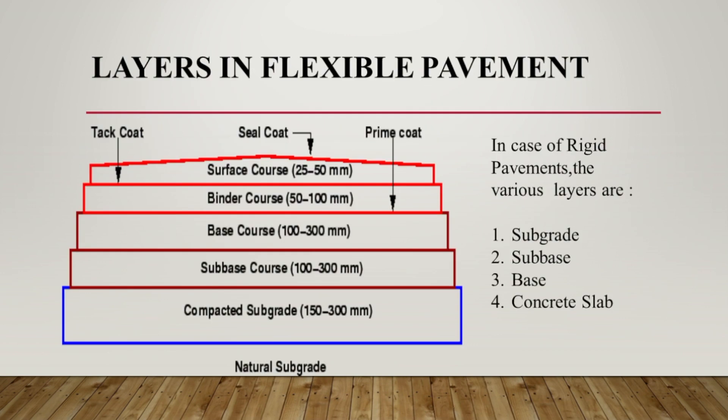First of all, these are the various layers of flexible pavement which includes subgrade, subbase, base, binder and surface course and the respective range of thickness are provided, starting from subgrade thickness which will be about 500 mm. From the base course to the subgrade it will be of granular layers, and the top layers of surface and binder course will be viscoelastic in nature.